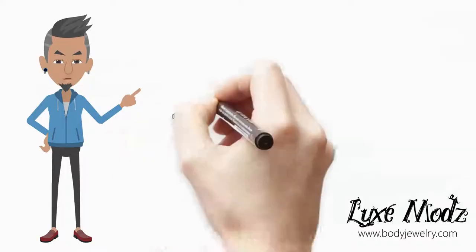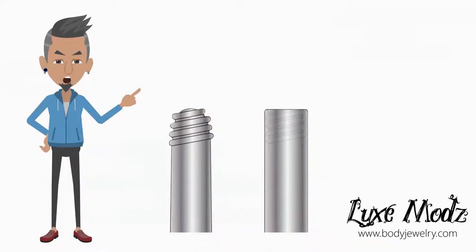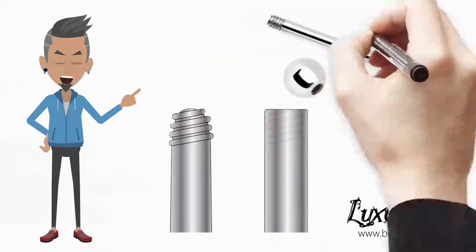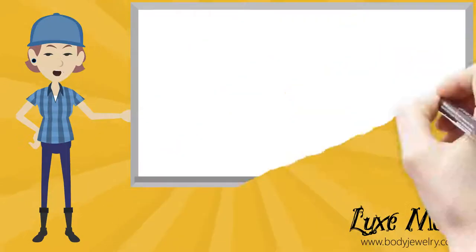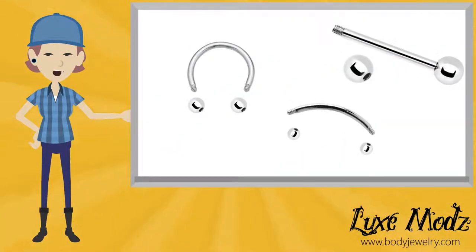Threaded body jewelry are those which require a thread to attach the decorative end of the jewelry body to the shaft that will be inserted into your piercing. Most barbells—straight, circular, and curved—fall into this category.